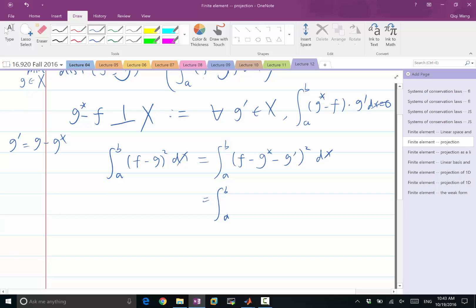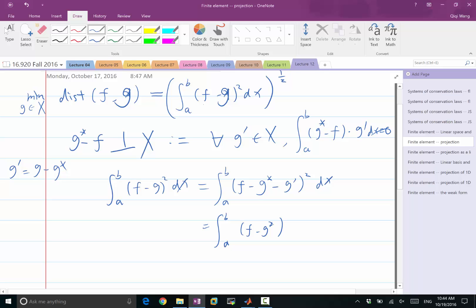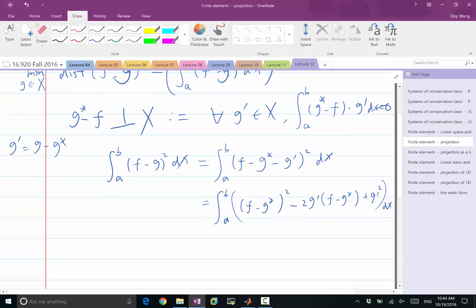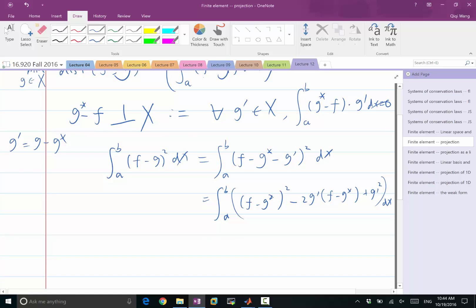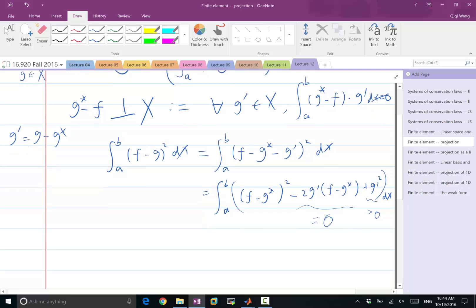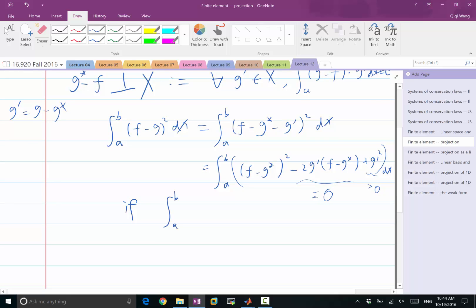And that, because of the property of the square, that's very special. That's why we design our objective function to be f minus g square. I can expand this into f minus g star square minus 2g prime times f minus g star plus g prime square dx. So I'm just expanding these perfect squares.